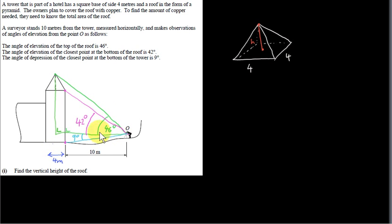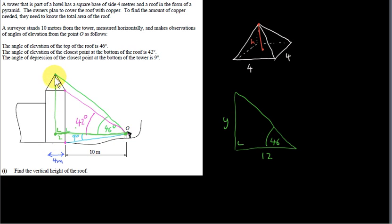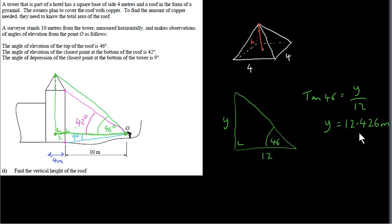We have an angle of 46 degrees in this right-angle triangle and we need a side. The side adjacent to 46 degrees is the distance from O to the center of the tower. The observer is 10 meters from the tower, and since the square base is 4 meters wide, the center of the tower is an extra 2 meters in, giving 10 + 2 = 12 meters adjacent. So tan(46°) = Y / 12, meaning Y = 12 × tan(46°) = 12.426 meters.